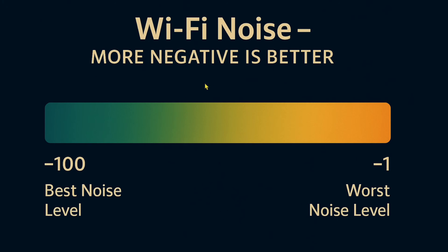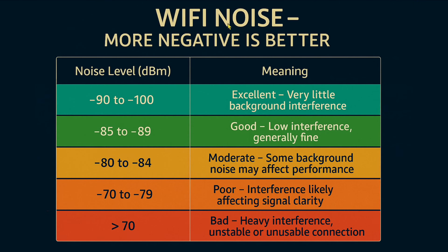On the noise chart, negative 100 means better noise level and negative 1 means worse — so you want a high negative number. A cleaner chart shows this clearly: more negative is better for Wi-Fi noise. My reading of negative 91 to 92 puts me in the excellent range with very little background interference. As you introduce more things, this number will go down toward moderate or poor.